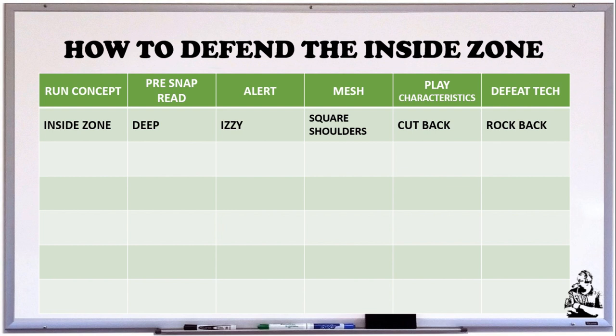The mesh is the exchange between the quarterback and the backfield — that can be the running back or a jet motion receiver. If we see square shoulders, meaning his shoulders are parallel to the line of scrimmage, we're thinking inside zone.